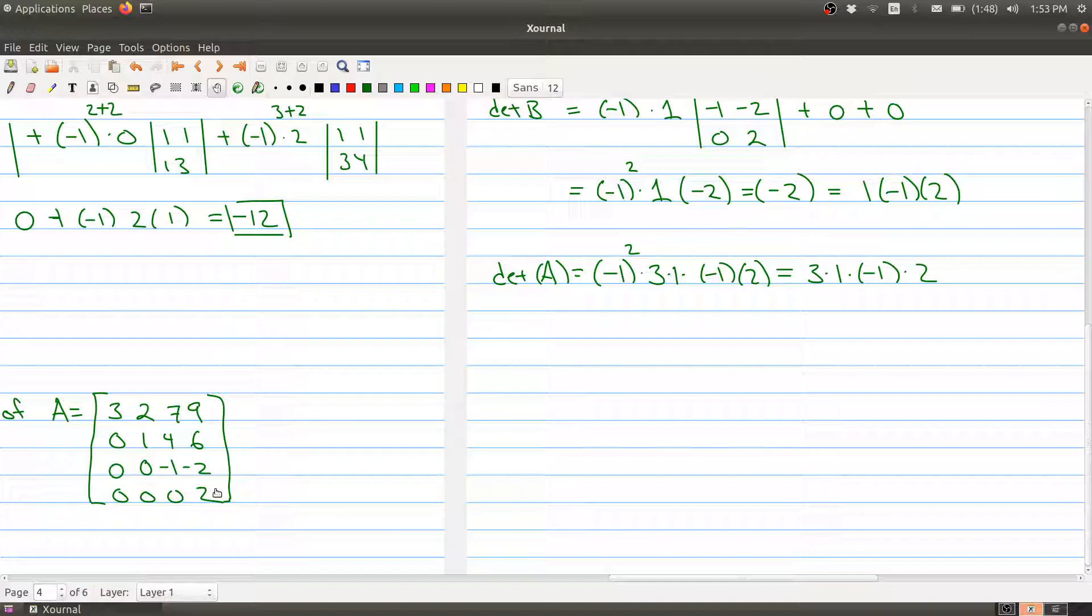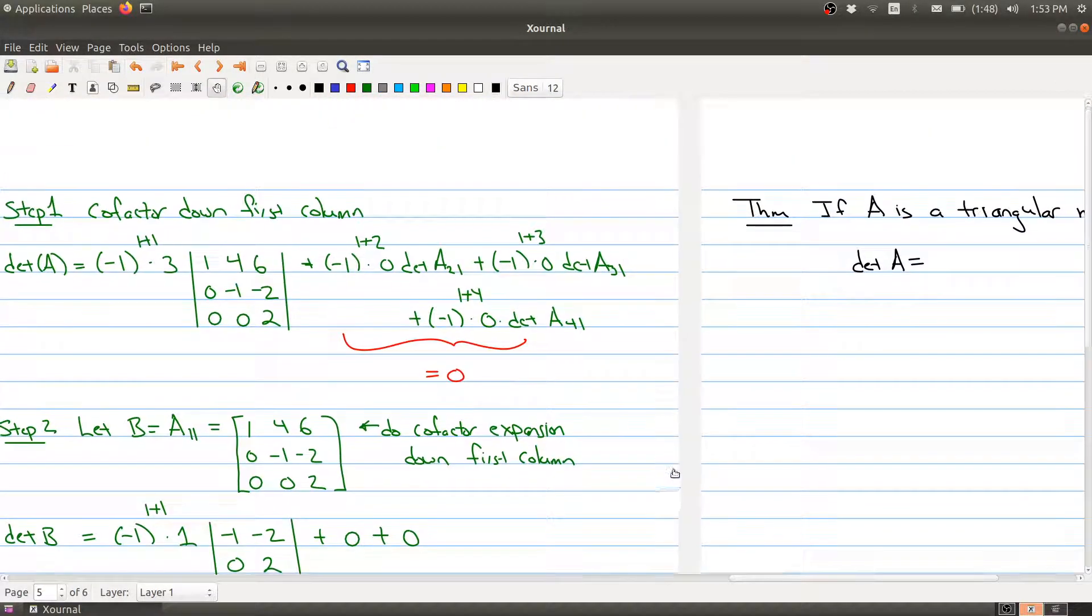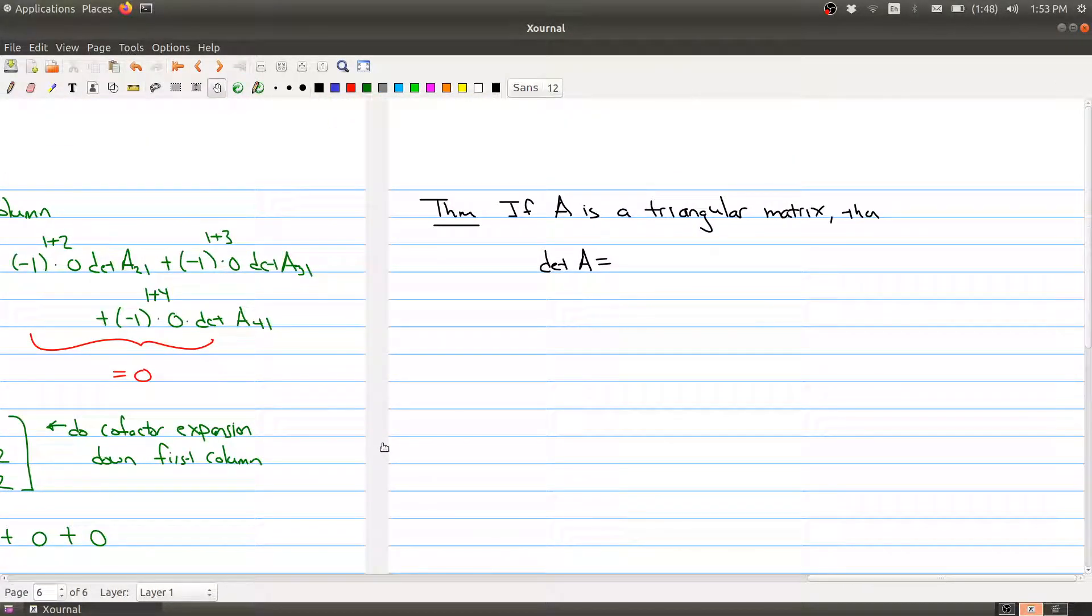In fact it's not, there's actually a theorem hiding here in the background. The theorem says that if you have a triangular matrix—where all the entries below the diagonal are 0 or above the diagonal are 0—then the determinant of your matrix is just simply the product of the diagonal entries. So it's very easy to compute.